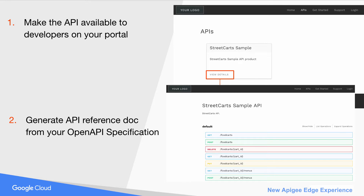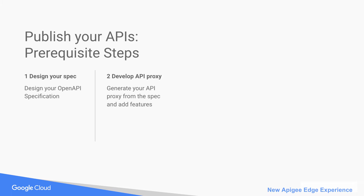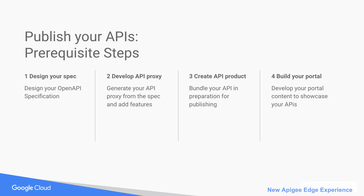Before you publish your APIs, you must complete the prerequisite steps. Design an OpenAPI specification that describes your API. Generate an API proxy from the specification and add required features. Create an API product to bundle your API in preparation for publishing. Develop your portal content to showcase your APIs. See the new Edge experience doc site for more details.